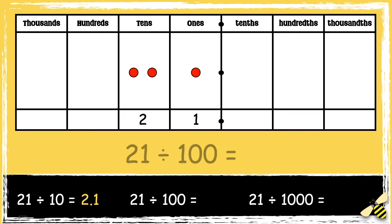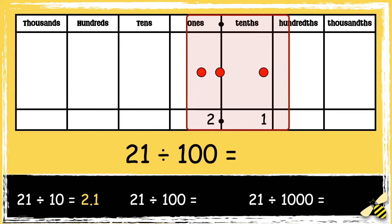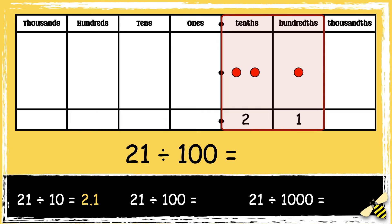Now let's divide the number by 100. When we divide numbers by 100, the digits move two spaces to the right. We need to use zero as a placeholder to show that there are no ones. So the answer is 0.21.